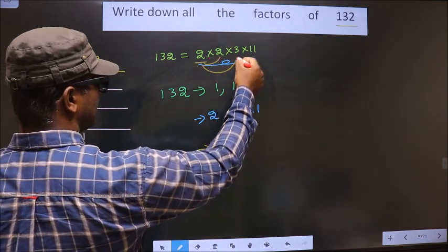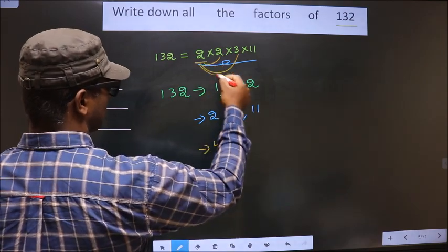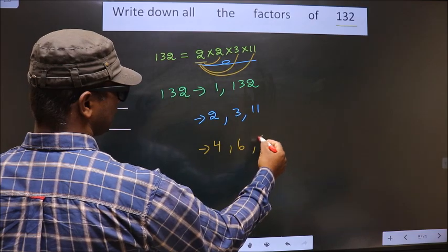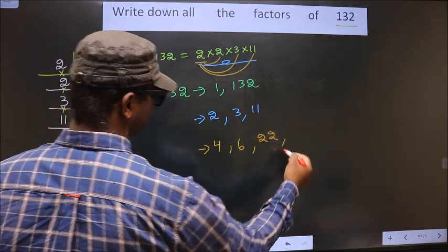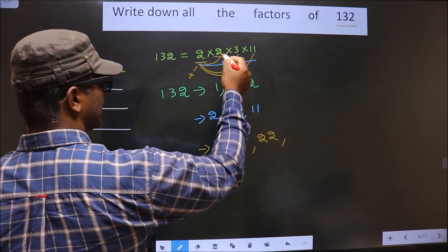Now combine this with the other number. That is 2 times 3 is 6. Now combine this with the other number, that is 11. 2 times 11 is 22.